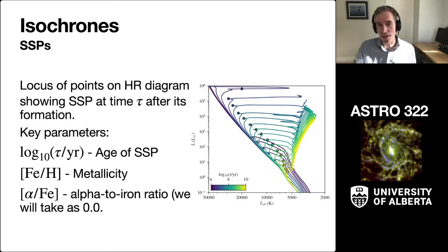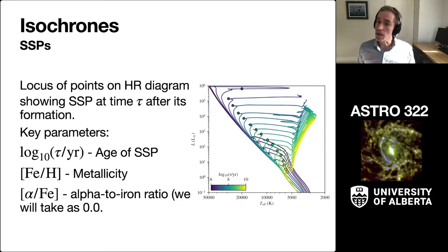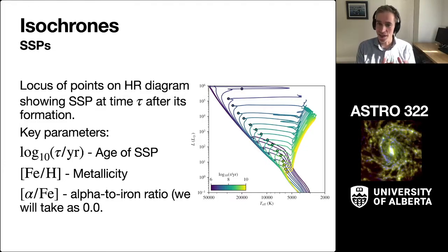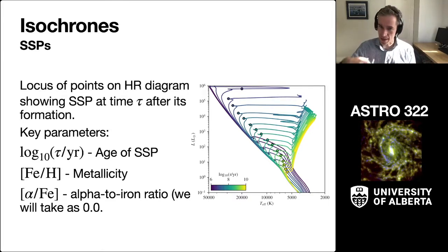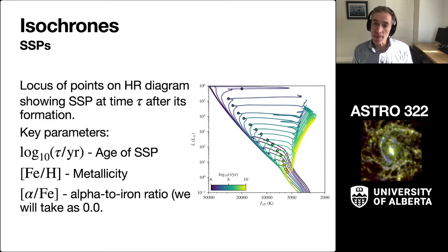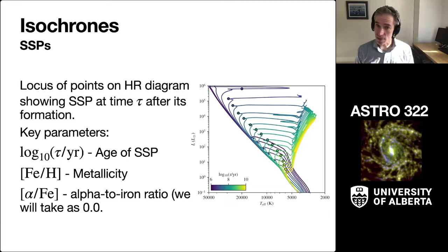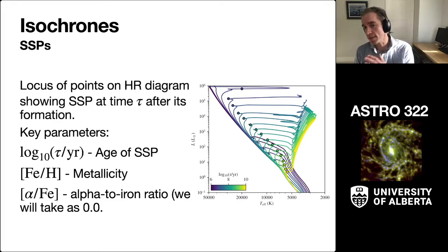Because stars evolve with a main sequence lifetime that's a power law, roughly the main sequence lifetime is the stellar mass to the negative 2.5 power, the log of the age is a very natural way to describe those time scales. High mass stars evolve relatively quickly and low mass stars take orders of magnitude more time, so the log kind of compresses that age scale into a set of numbers.